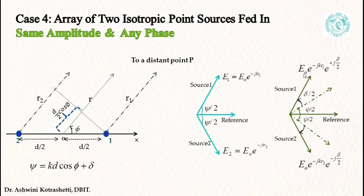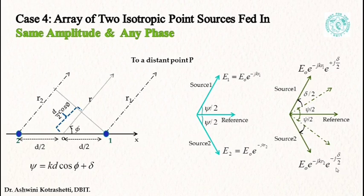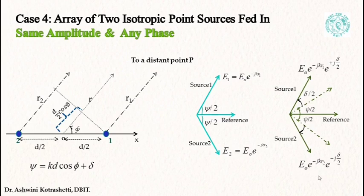So the field due to source one, E1, is equal to E0 e raised to minus jkr1, e raised to plus j(delta/2). Similarly E2 is equal to E0 e raised to minus jkr2, e raised to minus j(delta/2). Note that the vectors E1 and E2 are represented in terms of r1 and r2.